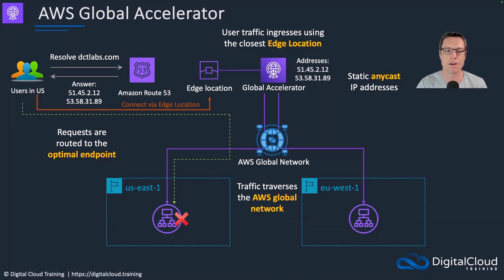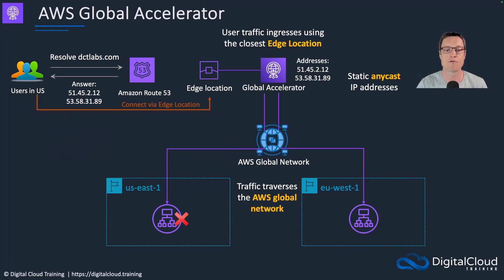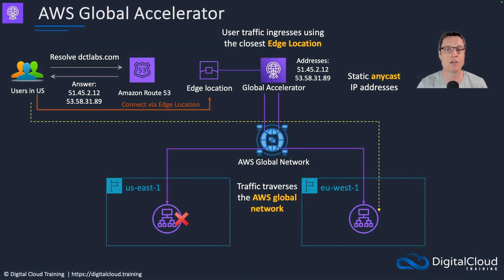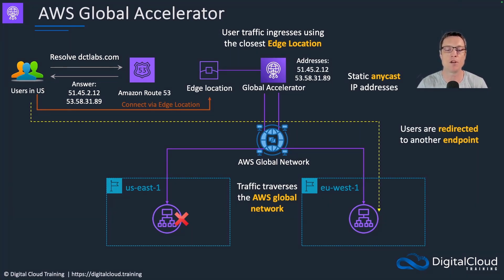If that site or the load balancer fails, those users will be reconnected to another region — the next most optimal region, which in this case is EU-West-1. That's users being redirected to another healthy endpoint, and there could be more endpoints available as well; we're just showing two here.